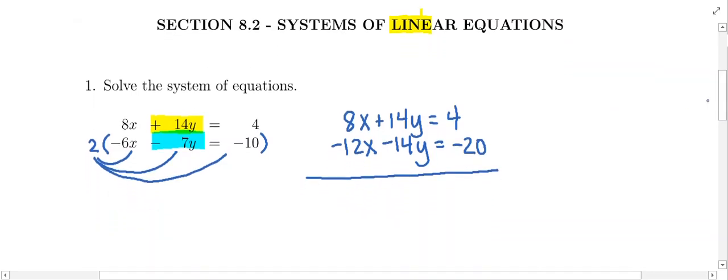And now we're going to add these equations together. 14y positive minus 14y, these guys are going to cancel. So then you add up your x's. 8x minus 12x is going to give us negative 4x. On the other side of the equal sign, 4 minus 20 is going to give us negative 16.